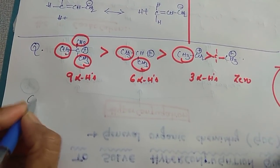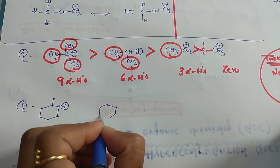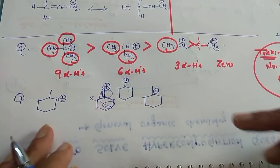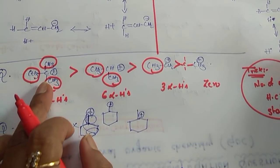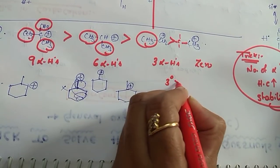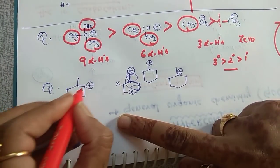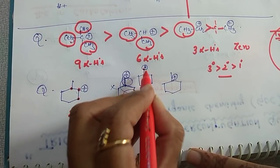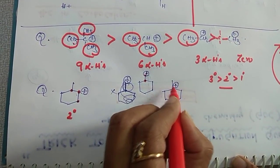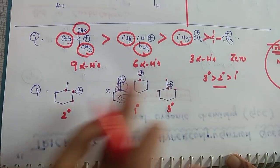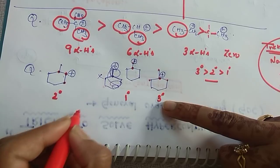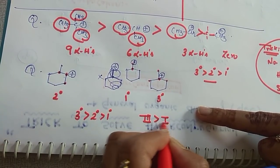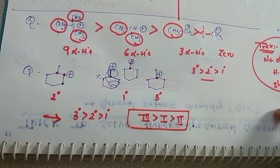Next question: among three given structures, which is most stable? These are tertiary, secondary, and primary carbocations. A tertiary carbocation is more stable than secondary, which is more stable than primary. Check each: if the carbocation carbon is connected to two carbons, it is secondary; to one carbon, it is primary; to three carbons, it is tertiary. So count alpha hydrogens or classify as tertiary/secondary/primary. The stability order is: tertiary > secondary > primary, meaning structure 3 > structure 1 > structure 2.